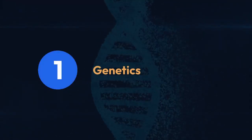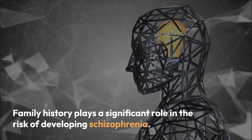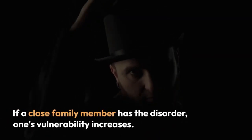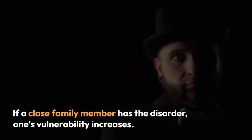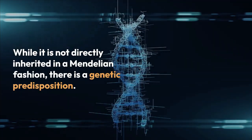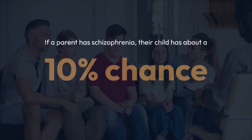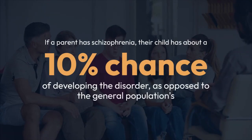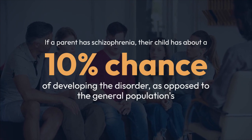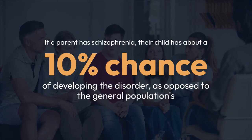1. Genetics. Family history plays a significant role in the risk of developing schizophrenia. If a close family member has the disorder, one's vulnerability increases. While it is not directly inherited in a Mendelian fashion, there is a genetic predisposition. If a parent has schizophrenia, their child has about a 10% chance of developing the disorder, as opposed to the general population's 1% risk.